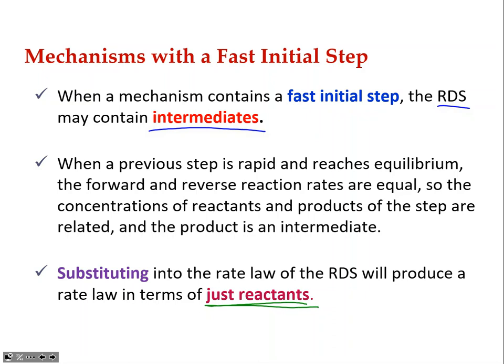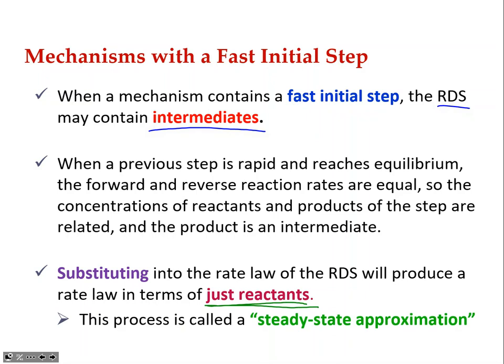The substituting process is a little confusing but makes sense conceptually. When the initial step is fast and the rate-determining step is either step two or step three, this is called the steady-state approximation. We have to substitute in to get rid of the intermediates. We'll go through the next exercise together to explain how this works.